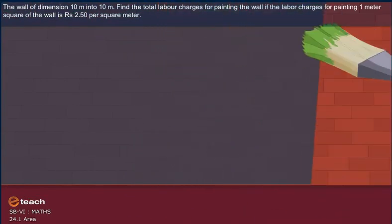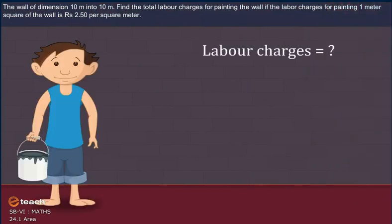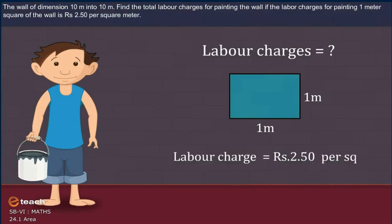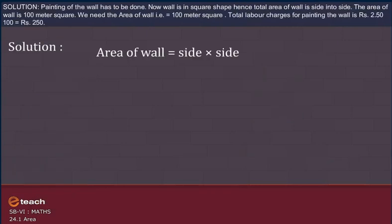The wall of dimension is 10 meter into 10 meter. Find the total labor charges for painting the wall if the labor charges for painting 1 meter square of the wall is rupees 2.50 per square meter.